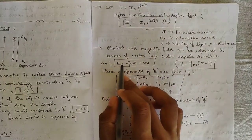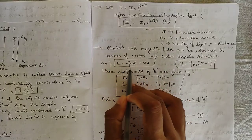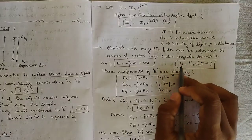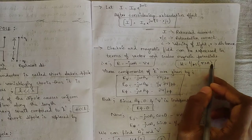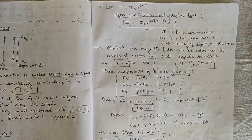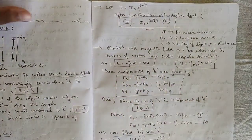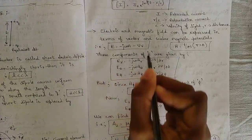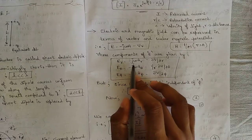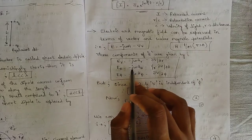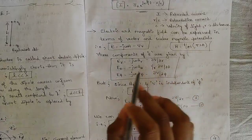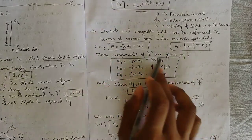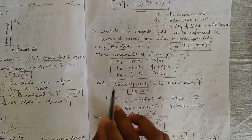The electric and magnetic fields can be expressed in terms of vector and scalar magnetic potentials. The electric field is E = −jωA − ∇V, and H = (1/μ)∇×A. The three spherical components of E are: Er = −jωAr − ∂V/∂r; Eθ = −jωAθ − (1/r)∂V/∂θ; Eφ = −jωAφ − ∂V/∂φ.